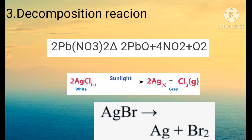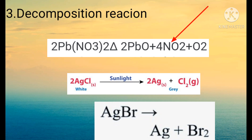The next example is lead nitrate. On heating this colourless compound we get yellow colour product, that is lead oxide — a basic oxide because metal oxide is a base. Along with that we get brown colour gas NO2 (nitrogen dioxide) and colourless gas O2 (oxygen). In this reaction three products are obtained from only one reactant, so it is called a decomposition reaction.